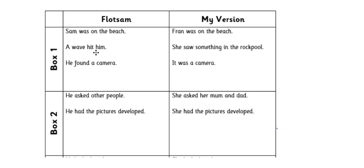Box one. Sam was on the beach, a wave hit him, he found a camera. This is not a good story at the moment — it doesn't include all of the things, it's just notes. In my version of the story, I'm going to write about a main character called Fran. Fran is a girl. Fran was on the beach. She saw something in a rock pool, like my ideas from yesterday. It was a camera.